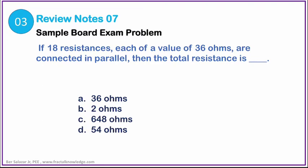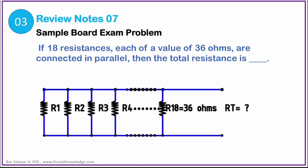Our third problem commonly appeared in the board exam with different values, yet the solution is the same. It reads like this: if 18 resistances, each of a value of 36 ohms, are connected in parallel, then the total resistance is blank. You can visualize it something like this. We have a shortcut formula for this kind of problem as long as the resistances in parallel have the same value across, in this case 36 ohms.